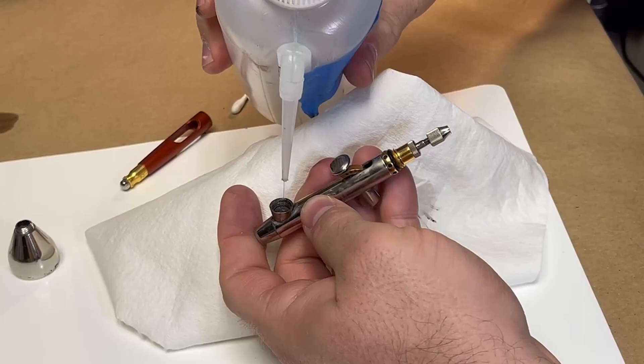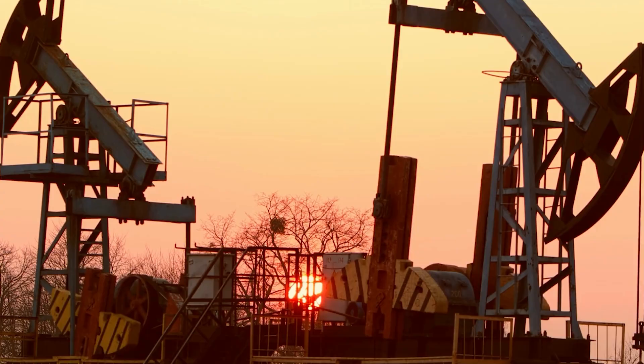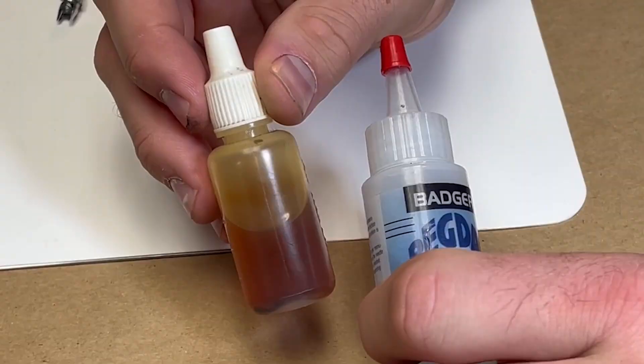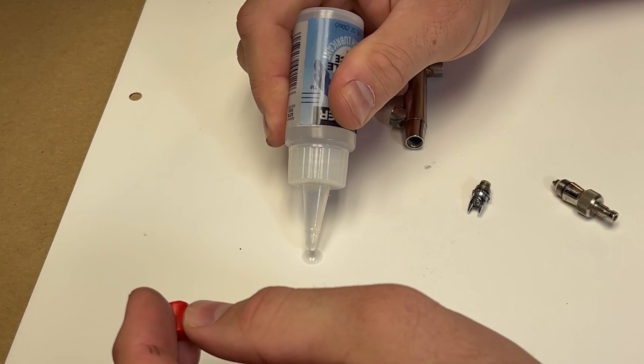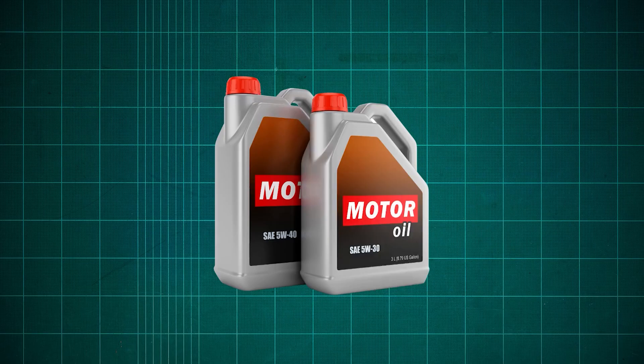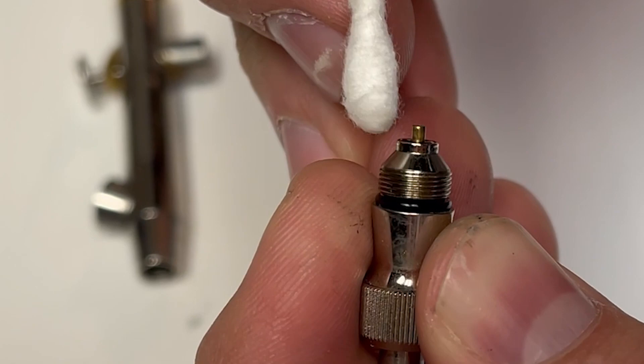Next, use the same cleaning solution and a Q-tip to clean out the paint cup and the channel. Now get yourself some oil—and I'm not talking about the bedroom type. I recommend some pneumatic oil, in this case Badger Needle Juice. Do not use regular motor oil; it's way too heavy.